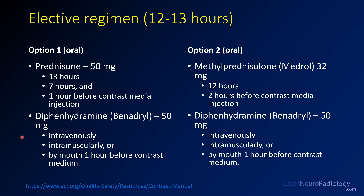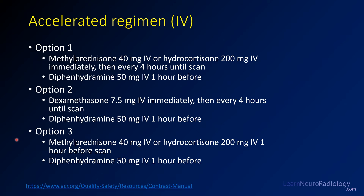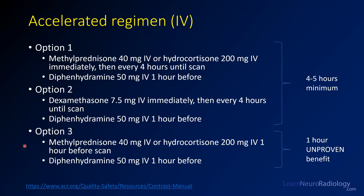The most common premedication regimen is oral prednisone for three doses prior to the procedure at 13, 7, and 1 hours before, and then Benadryl right before the procedure. There are alternate regimens with Medrol and Benadryl. In general, these are thought to be equally effective, but option one is preferred. If you're in a rush and need to perform a procedure immediately because the patient's going to the OR, you can give prednisone immediately and then every four hours until the scan, again giving Benadryl right before. There are alternate regimens with dexamethasone or methylprednisolone. You need to do these for four or five hours — there's no proven effect for doing something for just one hour.